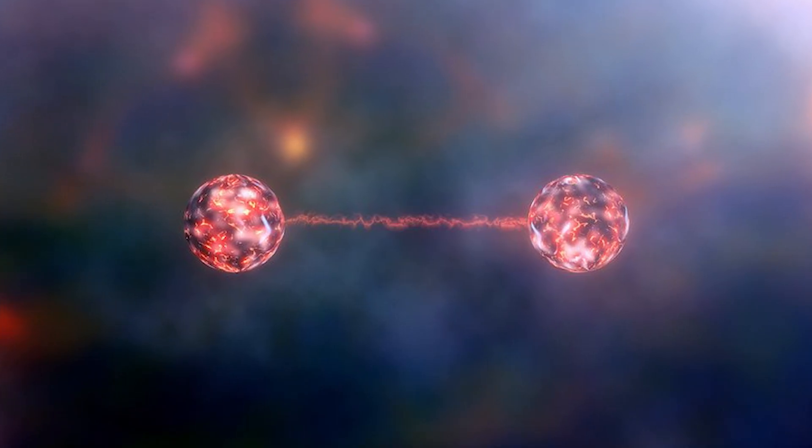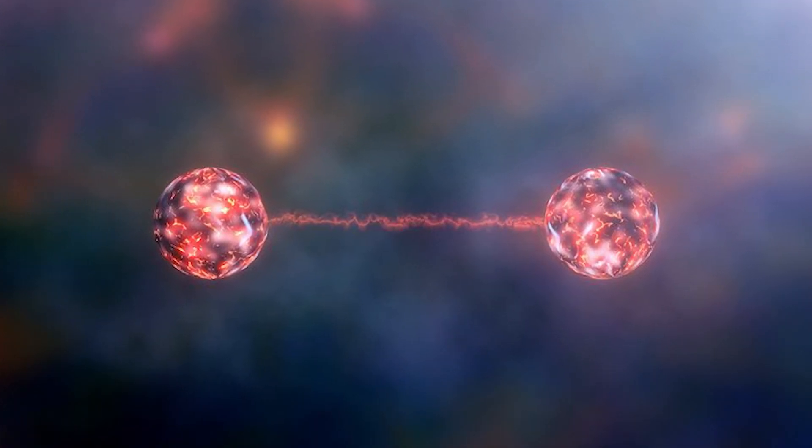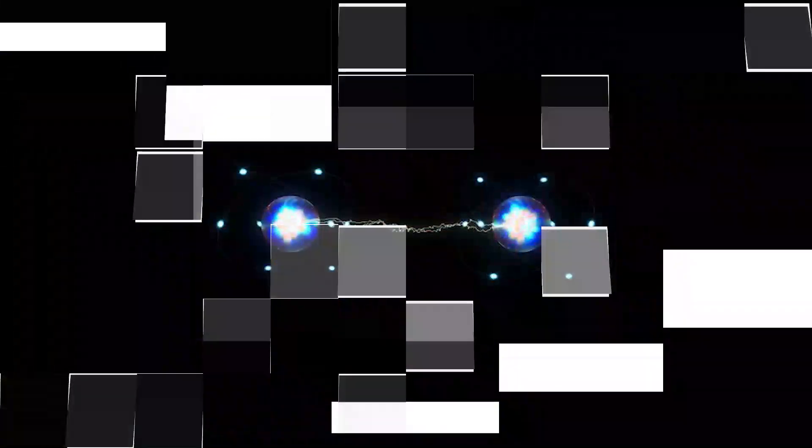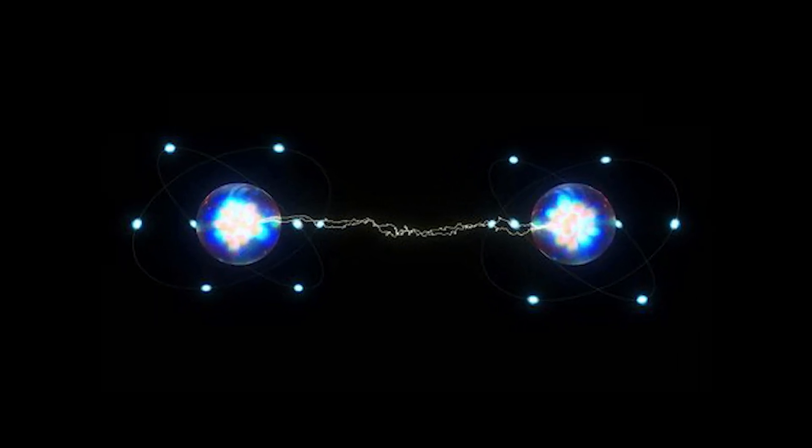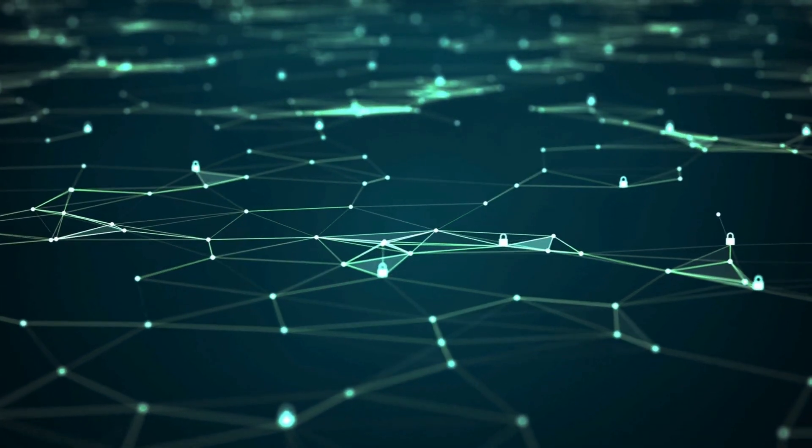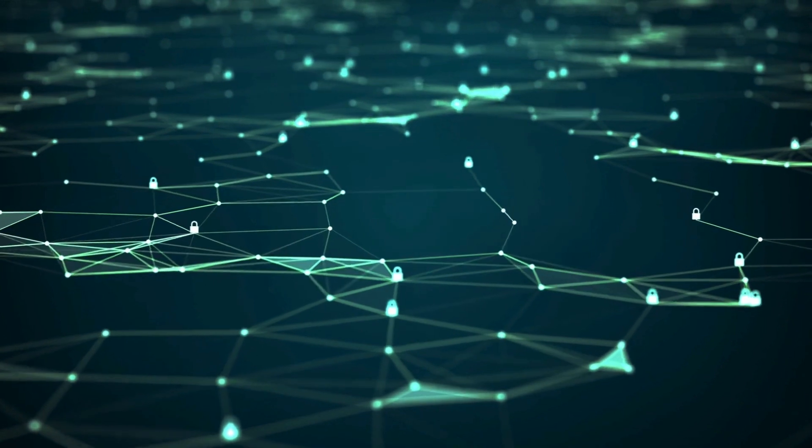And then we have entanglement. Quantum particles can get entangled so that whatever happens to one particle instantly affects the other, even if they're light years apart. Einstein famously called this spooky action at a distance, because it seemed like information was traveling faster than light.